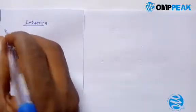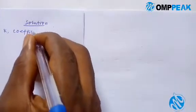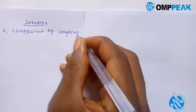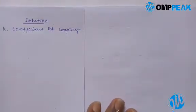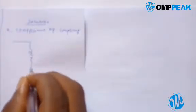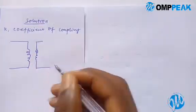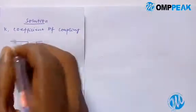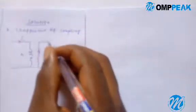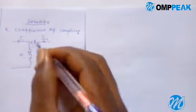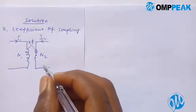k is our coefficient of coupling. Now to do this, let's draw the circuit. So we have a transformer — this one is coil one and coil two. Current flowing here is I1, current flowing back here is I2. These two are coupled by k.